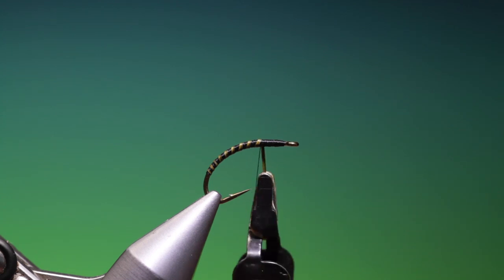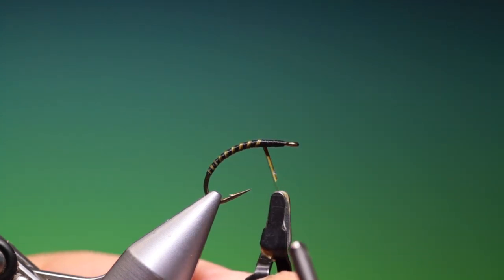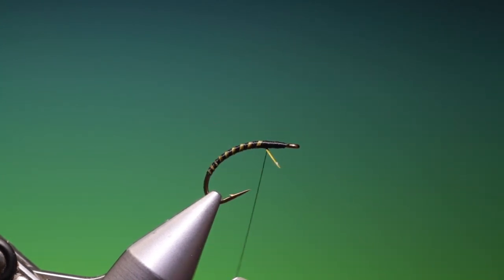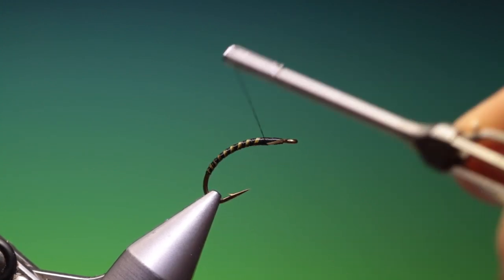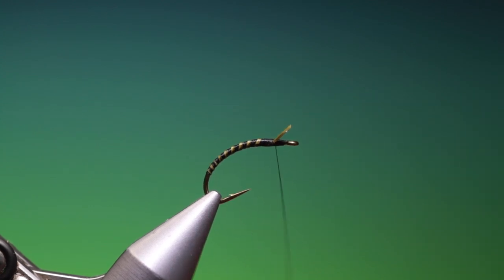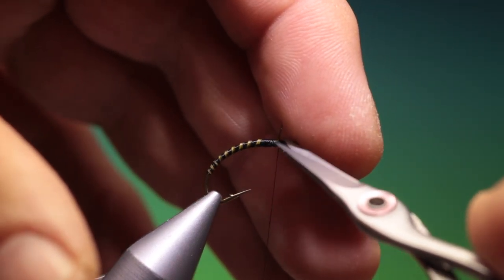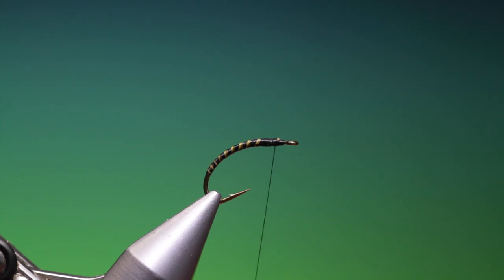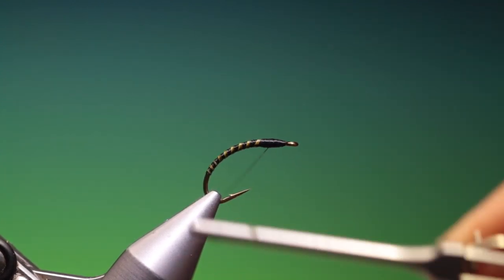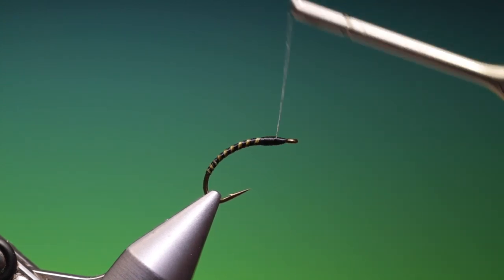And then we can go around there, secure that. Remove that, remove our hackle plier, and then just tie the end down. Again, flatten our thread, get to about there, and we can remove that. Go over that. There we go, that's good.